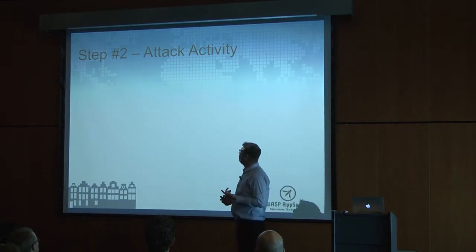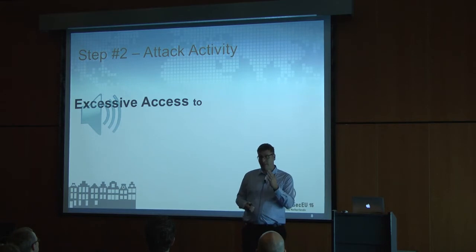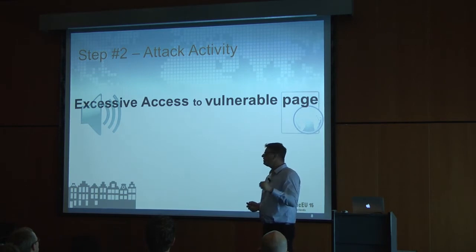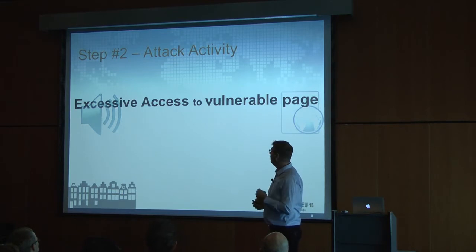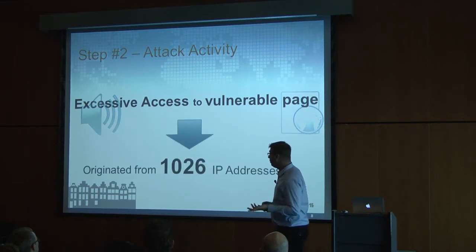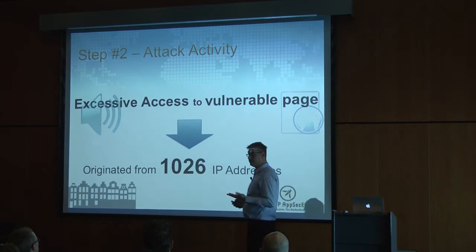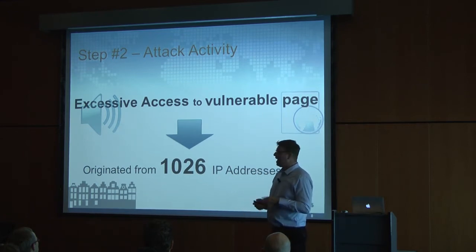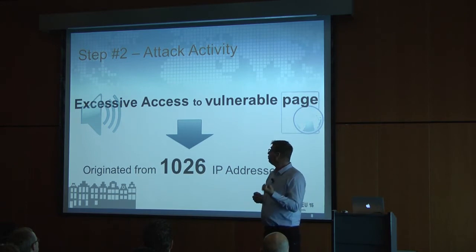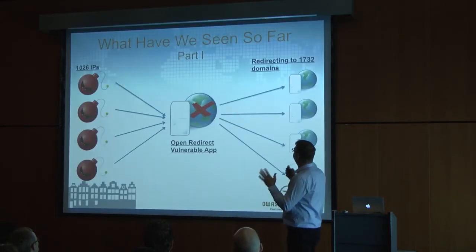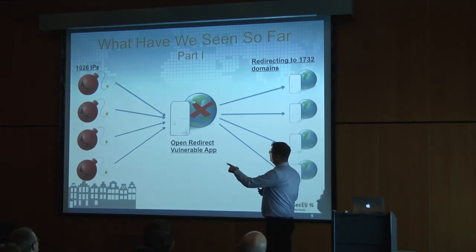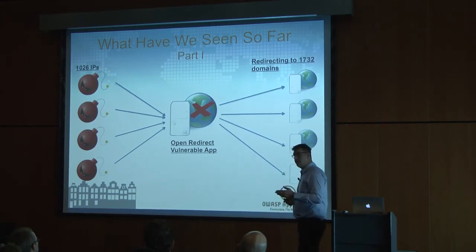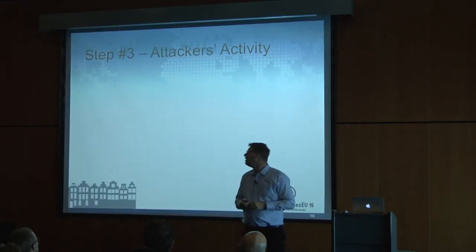The second step: let's see if there are other attackers on that application attacking the vulnerable page. What's common about those attackers is that they perform excessive access to that vulnerable page. Surprisingly, we found more than 1,000 IP addresses performing this kind of excessive access to the vulnerable page. Graphically: 1,000 IPs, one open-redirect-vulnerable application, and more than 1,700 domains being redirected to.